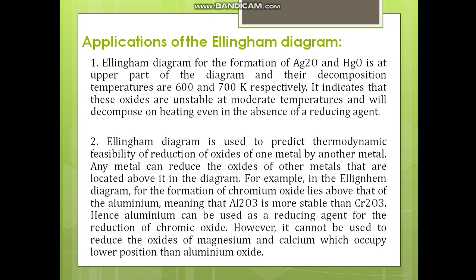The second application of the Ellingham diagram is that we can predict the thermodynamic feasibility of reduction of oxides of one metal by another metal. For example, in the Ellingham diagram, the line for chromium oxide lies above that for aluminium oxide, meaning Al₂O₃ is more stable than Cr₂O₃. Hence we can use aluminium as a reducing agent for the reduction of chromic oxide. The reverse is not possible because aluminium oxide is more stable.